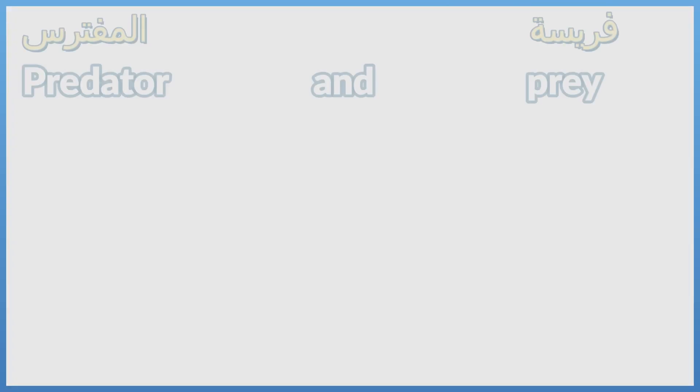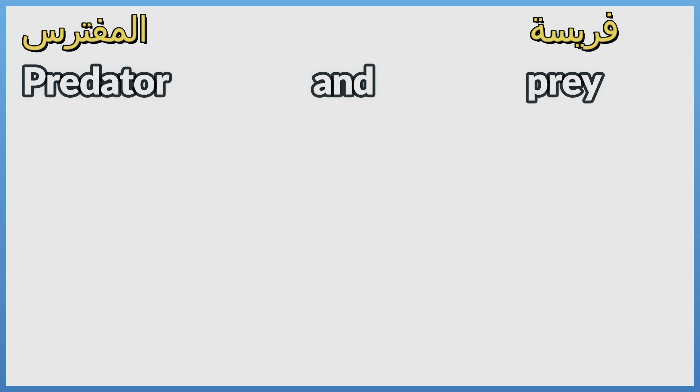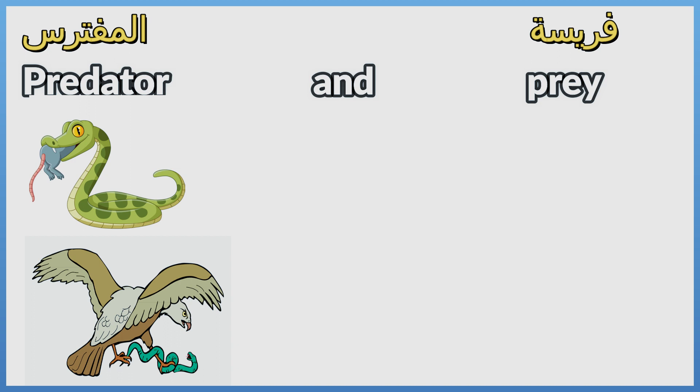Predator and prey. In the previous food chain, we can observe that the hawk and snake are predators because they hunt other animals.